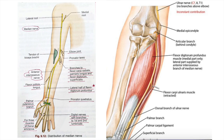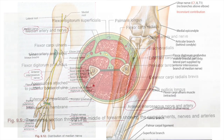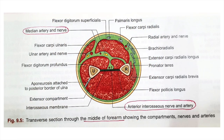An important point to understand this deformity: flexor digitorum profundus is a hybrid muscle. The lateral two tendons — for the index and middle finger — are innervated by the median nerve, while the tendons for the ring and little finger are innervated by the ulnar nerve.